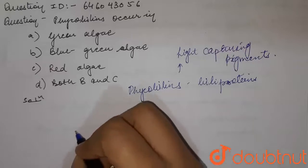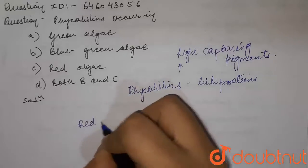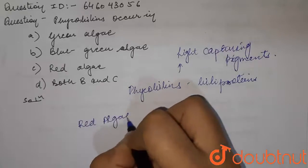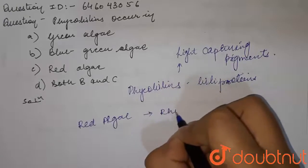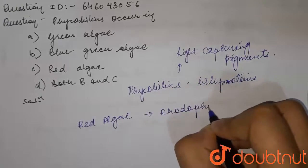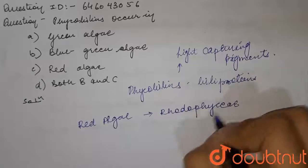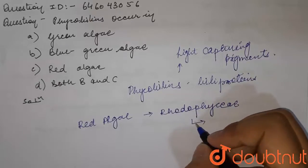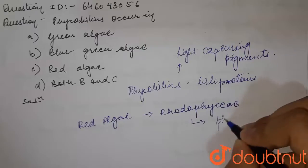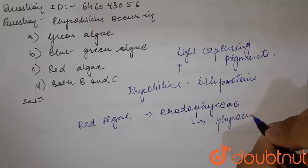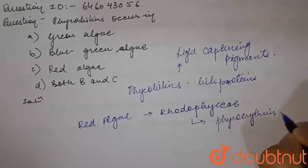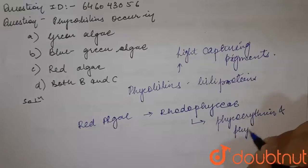If we talk about the red algae, which is also known as the rhodophycine, they have this distinct coloration and they have these excessive pigments which is phycoerythrine and phycokinin.